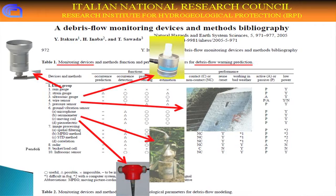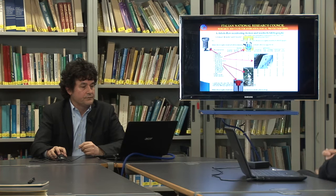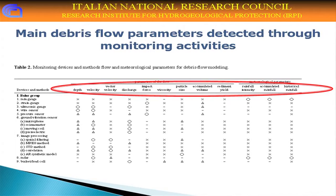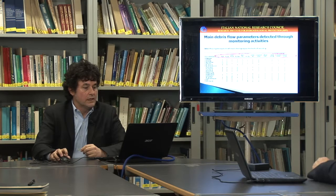We also have the broad family of contact sensors, including wire sensors. Then there are ground vibration sensors such as seismometers, geophones, underground microphones, and hydrophones — all measuring the ground vibration produced by debris flows. We also have pendulums, not mentioned in Itakura's list. In a second table, Itakura summarizes the main parameters that can be monitored through these different device types: depth, velocity, mean front velocity, discharge, volume, impact pressure, and so on.